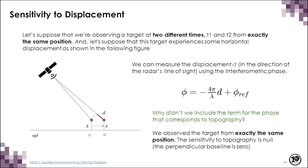Let's assume we observe a target at two different times, T1 and T2, but from exactly the same position so that the perpendicular baseline is zero. If this target undergoes horizontal displacement, we can measure it from the interferometric phase. We didn't include the topographic phase term because we're observing from the same position, so the perpendicular baseline is zero and the topographic phase term becomes irrelevant. This is the configuration we want when generating deformation maps.